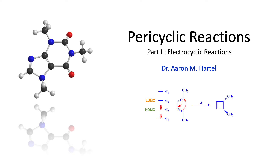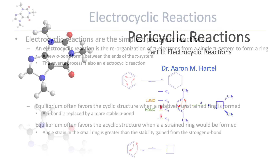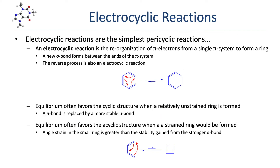In this lesson, we continue our exploration of pericyclic reactions, covering the fundamentals of electrocyclic reactions. Electrocyclic reactions are perhaps the simplest form of pericyclic reactions. An electrocyclic reaction is the formation of a ring via the reorganization of pi electrons from a single, conjugated pi system. In an electrocyclization, a new sigma bond is formed between the two ends of the pi system. The reverse reaction, which breaks open a ring via the same flow of electrons, is also considered an electrocyclic reaction.